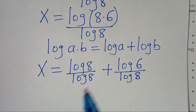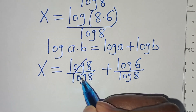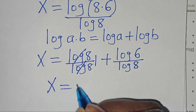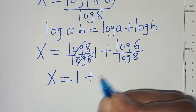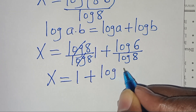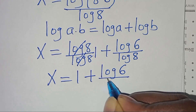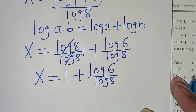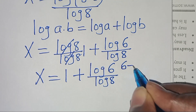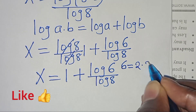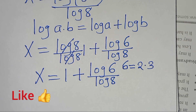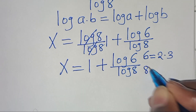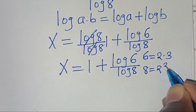The next step is to simplify log(8) over log(8), which equals 1. So x equals 1 plus log(6) divided by log(8). We can express 6 as 2 × 3, and 8 as 2 to the power of 3.